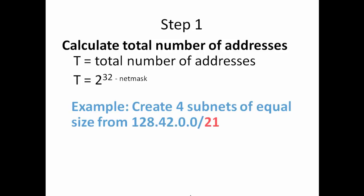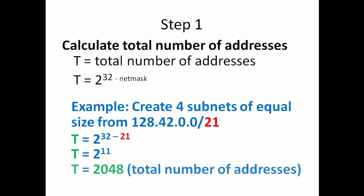Now, if you remember our net mask is going to be the 21 that's in red at the end of that, so we're going to create four subnets of equal size with the IP address and our net mask. There's our formula. T equals 2 to the 32 minus 21. That gives us 2 to the 11th. So we have a total of 2,048 total number of addresses.